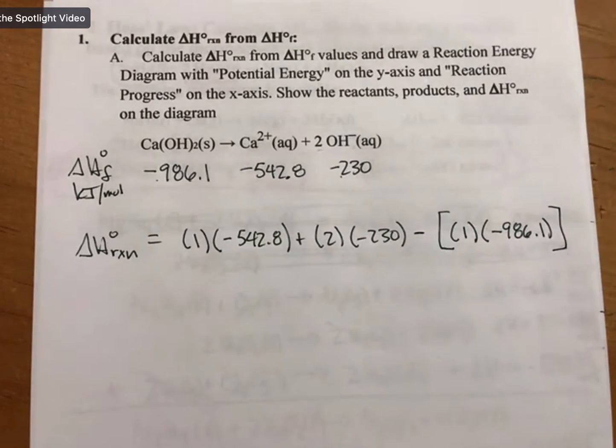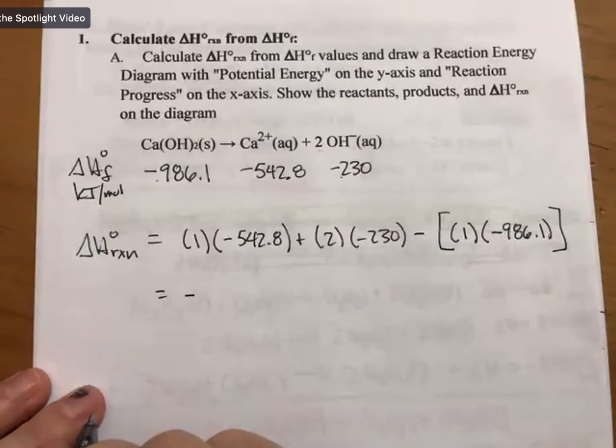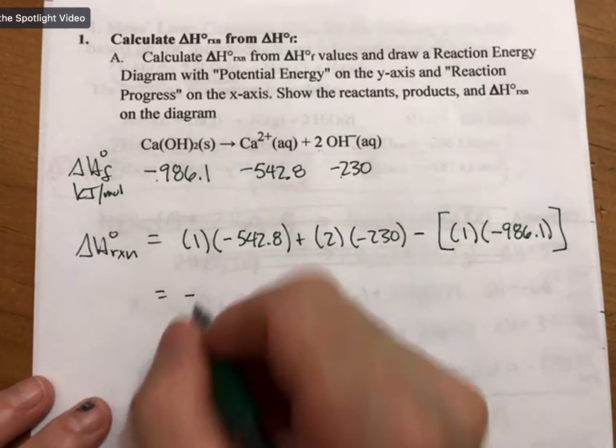And then subtract off the reactants. That gives us -16.75... or -16.7.